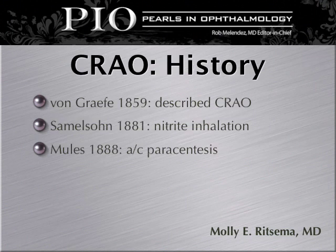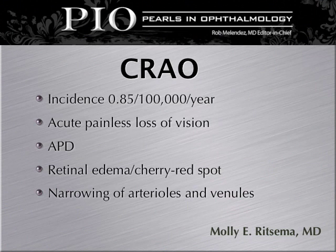A brief history on central retinal artery occlusion, also known as CRAO. It was first described by Dr. Von Graf in 1859. Dr. Samuelson in 1881 actually described nitrite inhalation for the treatment, and Mules in 1888 recommended an anterior chamber paracentesis. The incidence of CRAO has been reported to be approximately 0.85 per 100,000 people per year. It typically presents with acute painless loss of vision, APD, retinal edema with a cherry red spot, and narrowing of arterioles and venules.